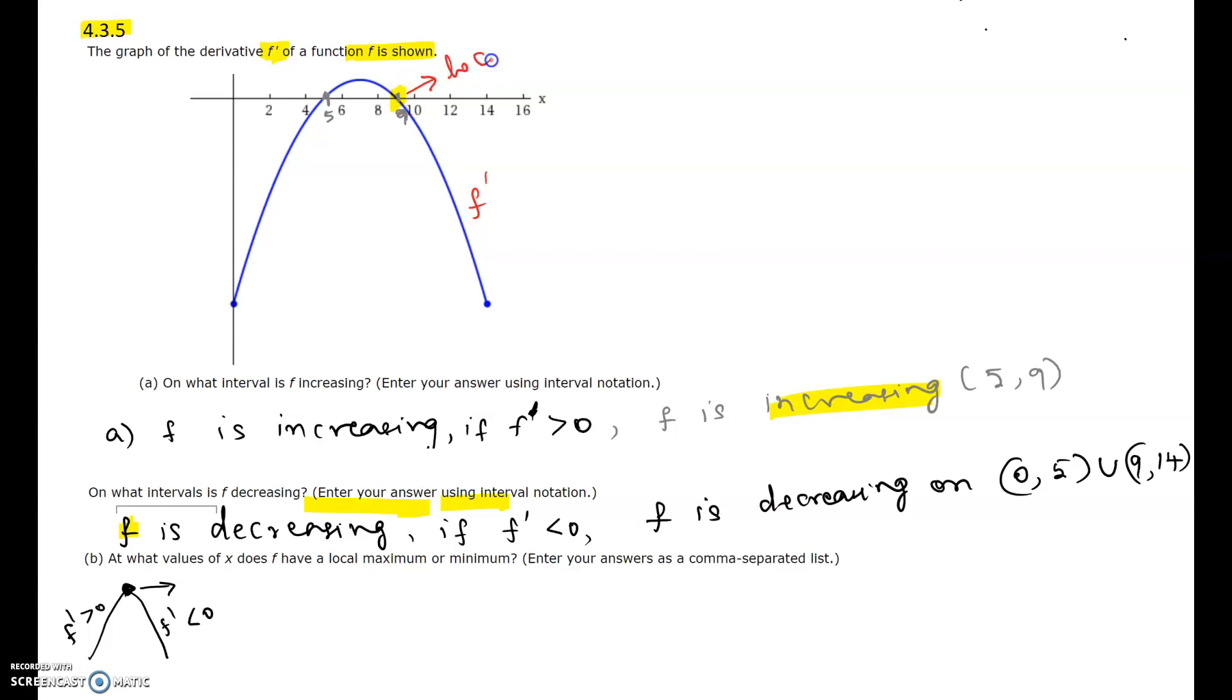Whenever the graph is decreasing and then increasing, there will be a valley. That's where the local min would be. It changes from f' negative to f' positive at x = 5. So local min at x = 5 and local max at x = 9. I hope this video helps. See you next time.